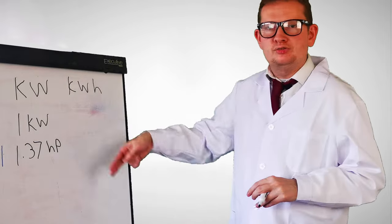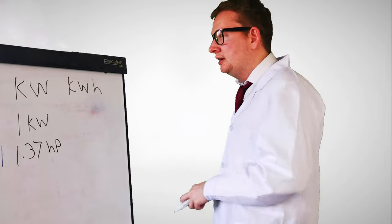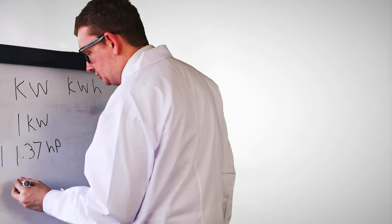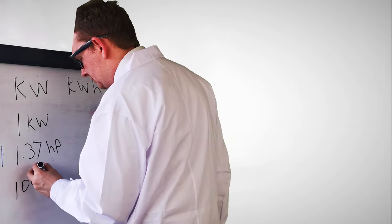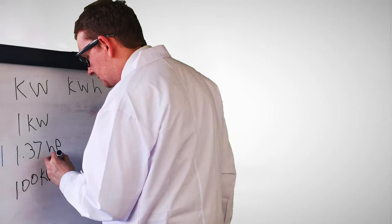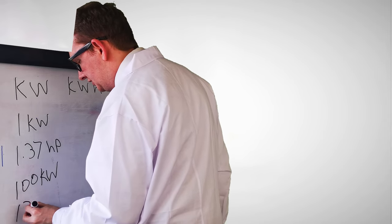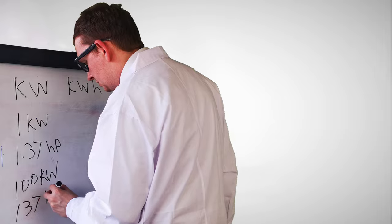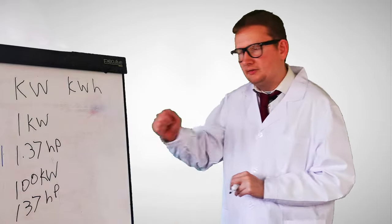Think of it as a metric and imperial type scenario here. So the idea is, if a car has 100 kilowatts of power, then it would have 137 horsepower, much like the Renault Zoe.